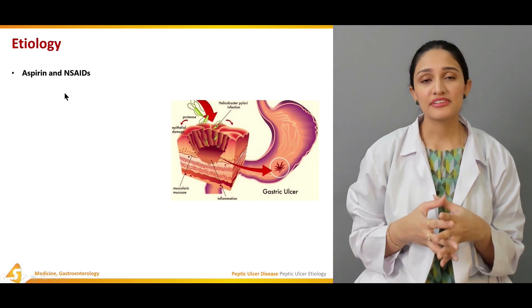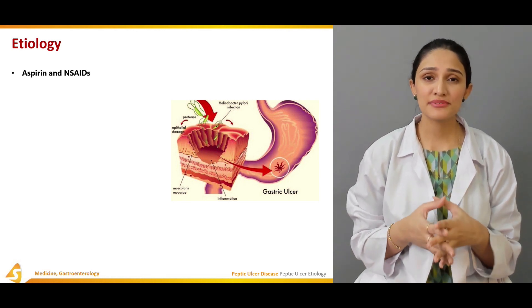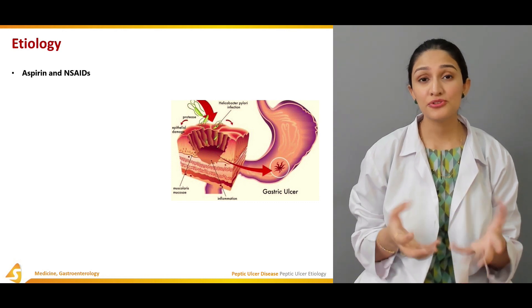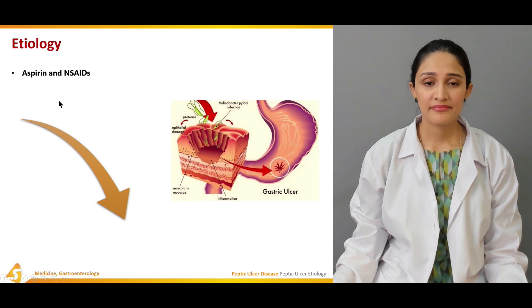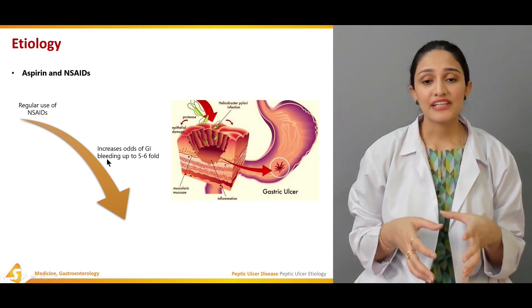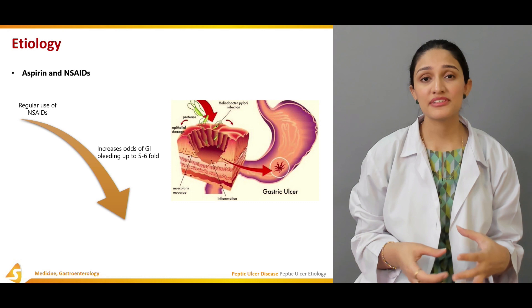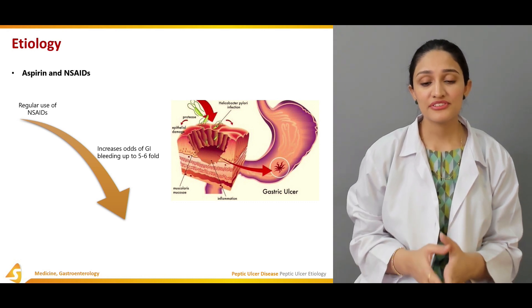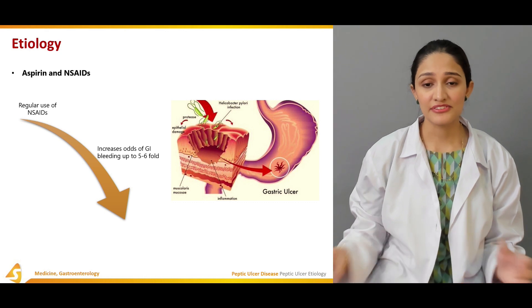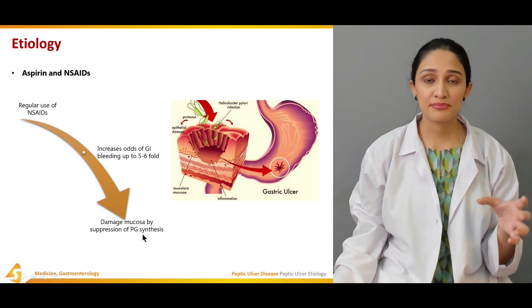The second causative factor of peptic ulcer disease is the use of aspirin and NSAIDs. Aspirin is widely used worldwide, with around 11% of the US population using it on a daily basis. Regular use of NSAIDs causes an increased odds of gastrointestinal bleeding of up to 5 to 6 folds, making patients more prone to develop upper gastrointestinal bleeding after developing a gastric ulcer. NSAIDs damage the mucosa by suppressing prostaglandin synthesis.